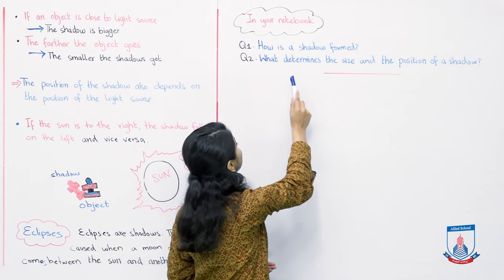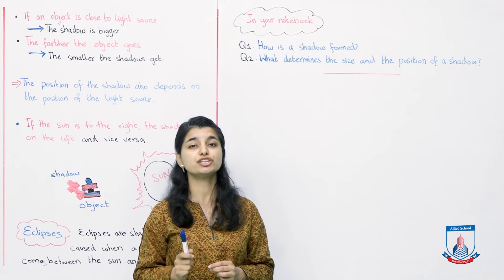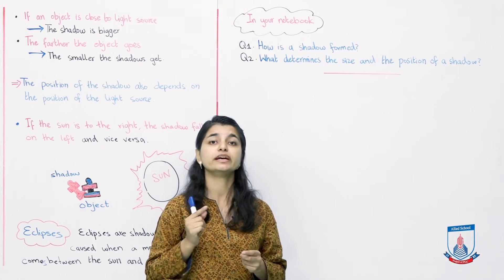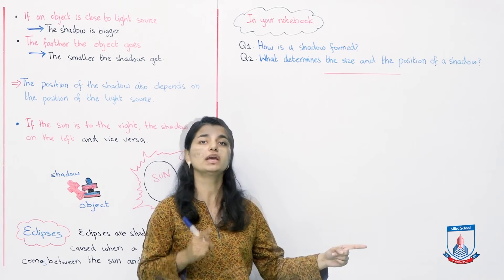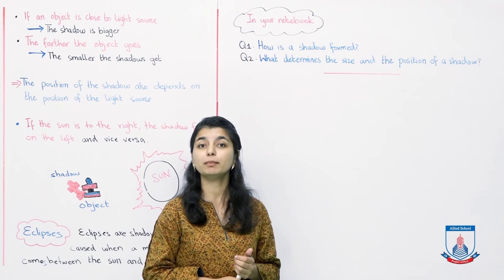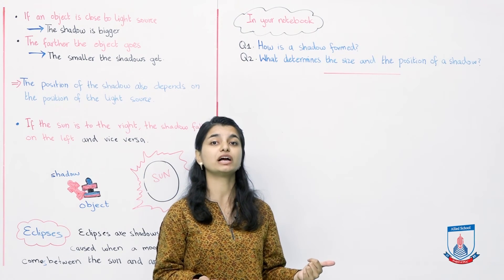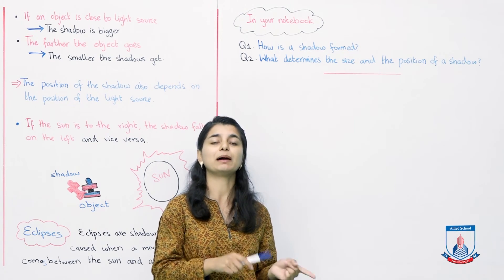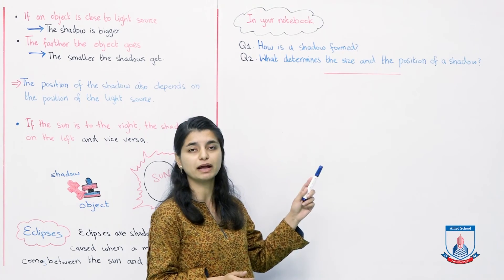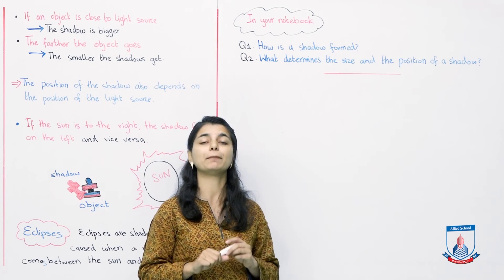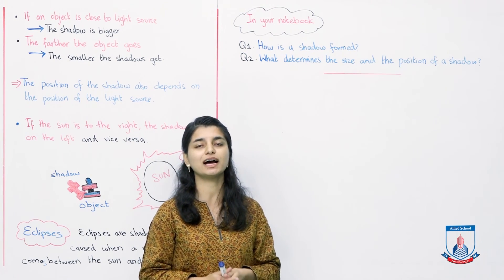Question 2: What determines the size and position of a shadow? As we discussed, both the size and position are determined by the light source. If the light source is close, the shadow is big; if it is far, the shadow is small. If the light source is on the left, the shadow falls on the right, and if the light source is on the right, the shadow falls on the opposite side. Describe these answers in detail in your notebook. We will continue this topic in the next lesson — see you again, Inshallah!